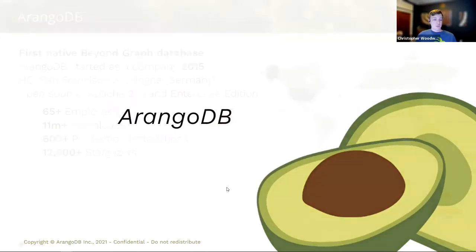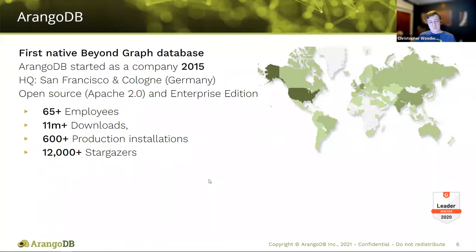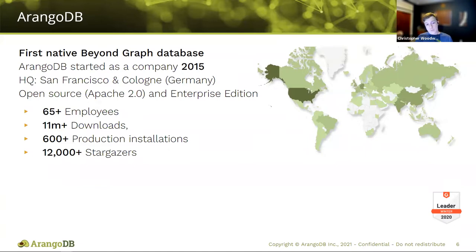ArangoDB is the first native beyond-graph database, founded in 2015, initially in Cologne, Germany, but now headquartered in San Francisco. We are an open source database under the Apache 2.0 license, and we also have an enterprise edition. We're rapidly growing — around 85-plus employees. We are actively hiring Python developers now, so if you're in the market, check out ArangoDB.com in our job section.